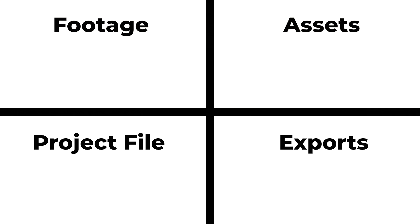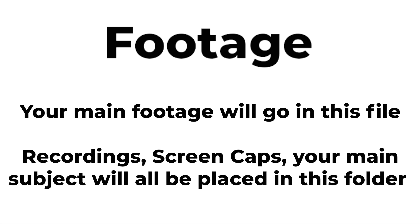We have: footage, assets, project file, and exports. When you are getting into video editing it's very helpful to just know where everything is, so if you're looking for a certain piece of footage it's just best to know where it is. The more compartmentalized everything is, the easier it is to find. Footage is your main footage — anything that you have recorded that is your main thing, including camera recordings or screen recordings from applications such as OBS.